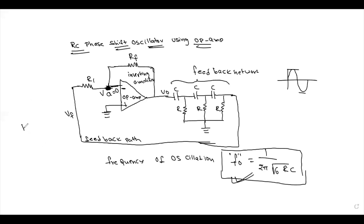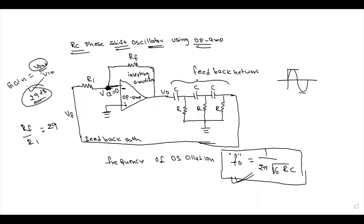The first condition for oscillation is RF / R1 = 29, meaning the gain of the amplifier must be at least 29. Gain is defined as output divided by input: voltage gain is V_out / V_in, and current gain is I_out / I_in. The feedback resistance R_F must equal 29 × R1 to satisfy this condition and achieve the required oscillation frequency.